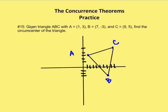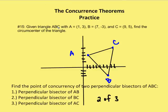So first problem, problem number 15: given triangle ABC with A at coordinate (1, 3), B at (7, -3), and C at (9, 5), we're going to find the circumcenter of the triangle. Recall that the circumcenter is the point of concurrency of the perpendicular bisectors of a triangle, and because the point of concurrency of two of the bisectors is the same as three, all we need to do is define two of the three perpendicular bisectors.